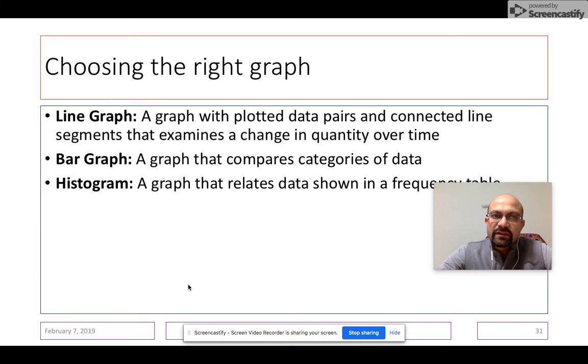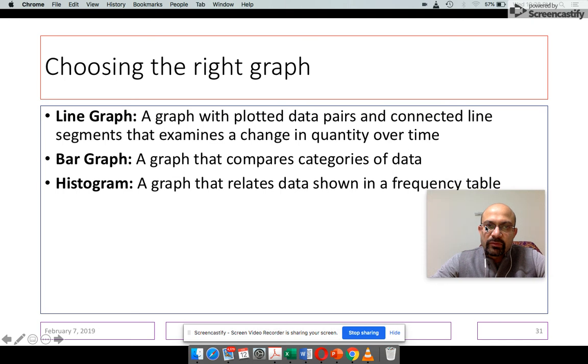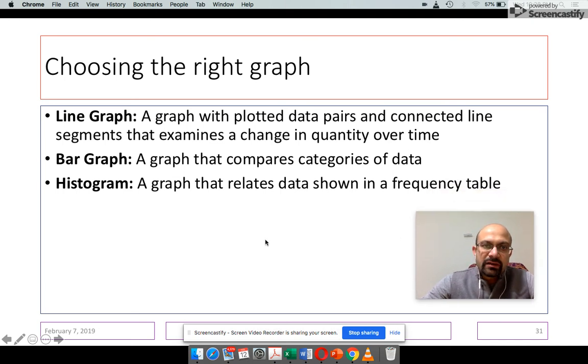So while you are choosing the graph, be careful in what kind of graph you choose, whether you are putting up a line graph or a bar graph or a histogram. So a line graph is a graph with plotted data pairs and connected line segments that examines a change in quantity over time. A bar graph compares categories of data and a histogram is a graph that relates to the data shown in the frequency table.